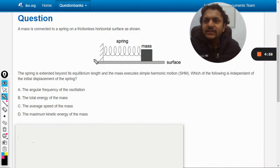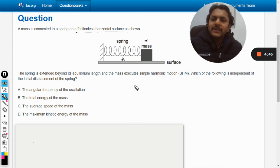Okay, let's see what is in this question. A mass is connected to a spring on a frictionless horizontal surface as shown. There is a spring with spring constant k and mass m. It is given that there is no friction between the mass and the surface, so there are no losses of energy.